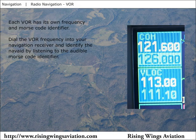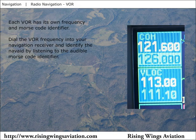Each VOR has a unique three-letter identifier. By hearing the Morse code for this three-letter identifier, you have positively identified that the signal on your display is being received from the intended VOR.